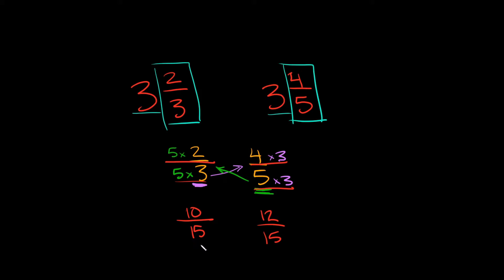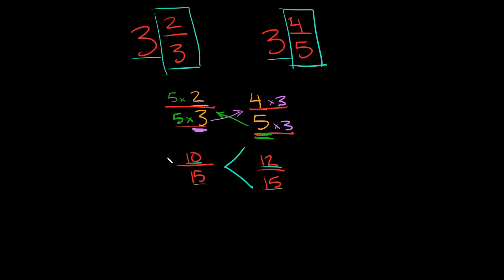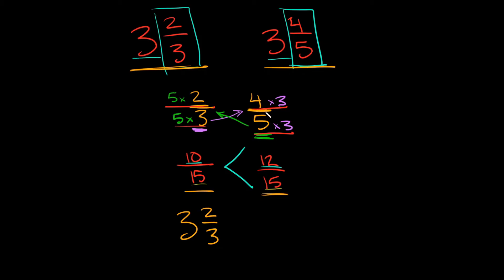Now we have the same denominator on both sides — 15 and 15. So all I have to do is compare their numerators. Which number is bigger, positive 10 or positive 12? Positive 12 is bigger, so I want to eat the bigger number and my inequality faces that way. Remember, we're comparing three and two-thirds and three and four-fifths — 10 over 15 was two-thirds, and 12 over 15 was four-fifths. So the answer is: three and two-thirds is less than three and four-fifths.